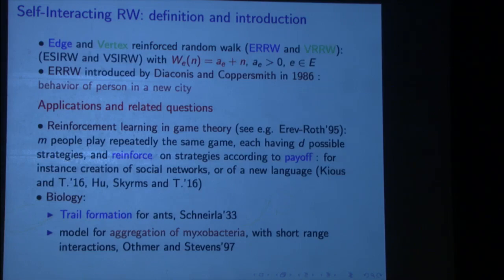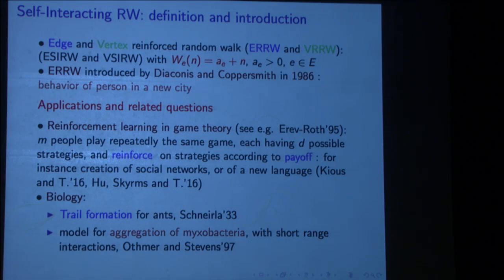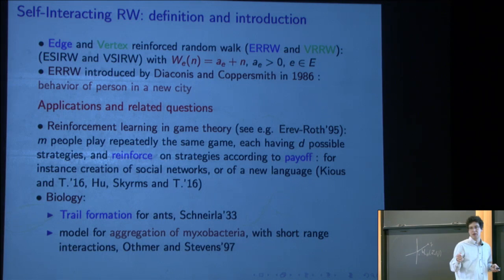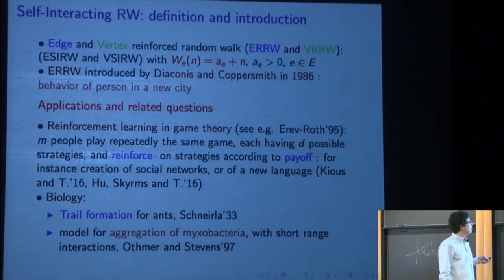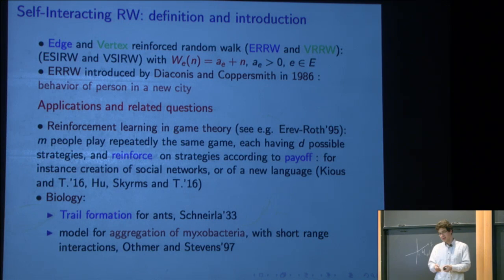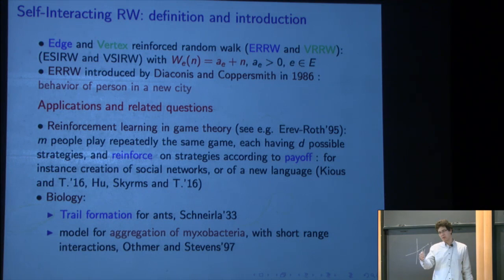For the edge reinforced random walk the definition is exactly the same except you replace the number of visits to the adjacent vertex by the number of crossings of the corresponding non-oriented edge ij — that is, the number of visits from i to j and from j to i. The linear case is where w_e(n) = a_e + n, allowing a_e to depend on the edge. These linearly reinforced walks are called edge and vertex reinforced random walks (ERRW and VRRW), introduced by Diaconis and Coppersmith in 1986.